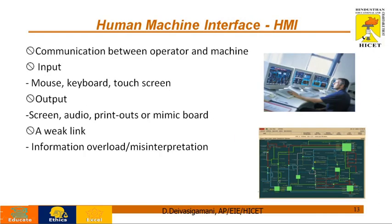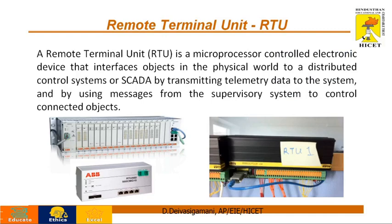HMI is the interface between human and machine. It has inputs such as keyboard, mouse, and touchscreen, and outputs such as printouts, audio, and screen. It establishes communication between the operator and the machine. RTU is the remote terminal unit — this is the actual RTU server. It is a microprocessor-controlled device that directly interfaces physical objects, providing distributed IOs to the system and establishing the telemetry unit of a SCADA system.